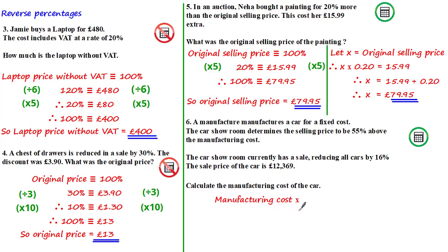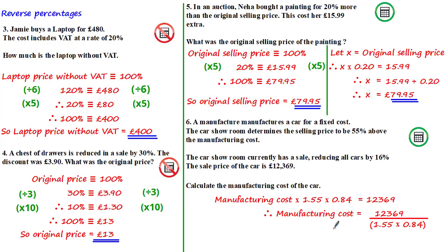Starting with the manufacturing cost: to get the first selling price we multiply by 1.55, the equivalent multiplier for a 55% increase. Since all cars were then reduced by 16%, we multiply by 0.84, the equivalent multiplier for a 16% decrease. The result equals the sale price of £12,369. So: manufacturing cost times 1.55 times 0.84 equals £12,369. Dividing both sides by 1.55 × 0.84, using your calculator gives the manufacturing cost equal to £9,500.